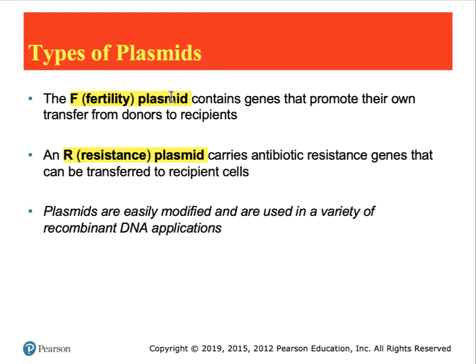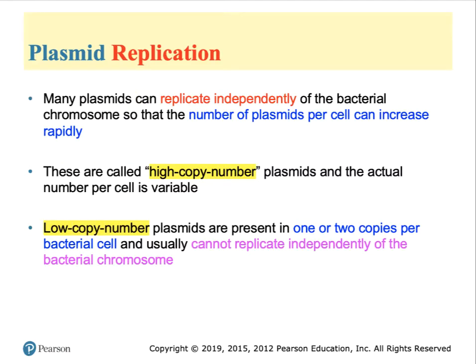The prefix to the name of the plasmid gives a clue as to what that plasmid does for that bacterial host. F stands for fertility, R stands for resistance to antibiotics. Plasmids fall into two classifications when it comes to their number within the bacterial cell. Some are high copy number — they can replicate independently and may reach two to four hundred copies per cell. Others are low copy number, where the plasmid is tied to the replication of the bacterial chromosome itself, with one or two copies per cell.